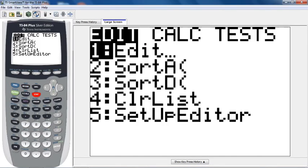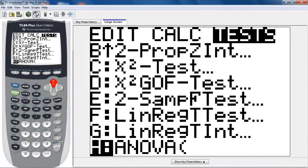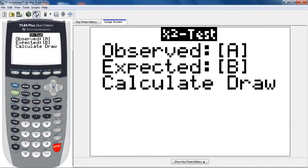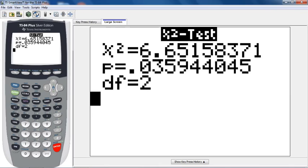So we're going to go stat, test, and then chi-square test. Not the GOF one. That was last section. So it's just chi-square test. Okay, so now once I select chi-square test, it's going to say observed in matrix A, expected in matrix B. Check, check. We already did both of those things. So let's go ahead and calculate. And there it is. Beautiful.